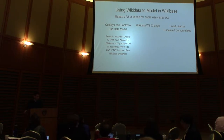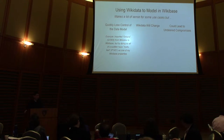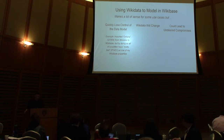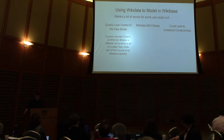Another issue I've already talked about is that Wikidata will change, and if we're talking about this fluid model, our little Wikibase would change too. So how do you keep those in alignment? There are probably ways to do that, but that's also an issue. This could also lead to undesired compromises. There's something to be said for thinking more directly and purely about your use case, as opposed to creating a data model in relationship to all of these established properties that are in Wikidata.